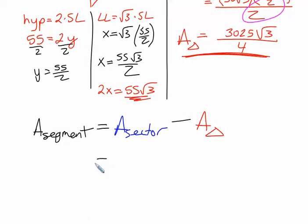So when we put this in here, that's going to be the 3025 pi divided by 3, minus the area of the triangle, which was 3025 radical 3 all over 4.